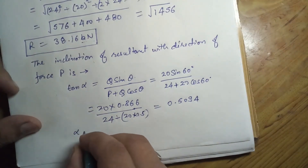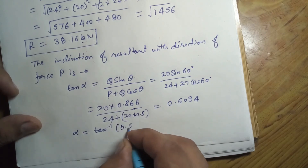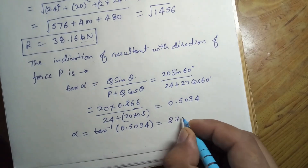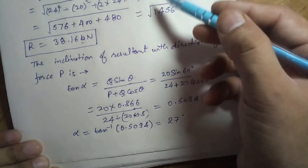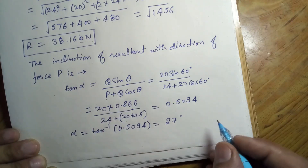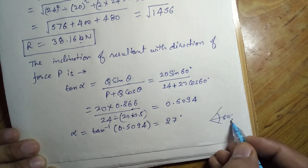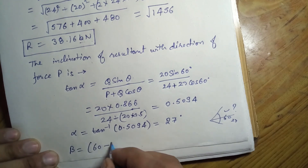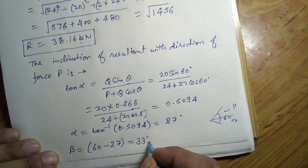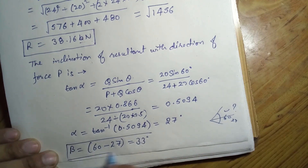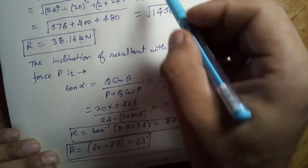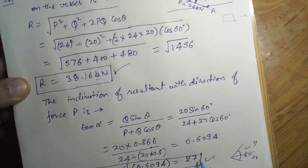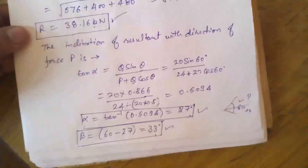From tan(α) = 0.5094, we get alpha = tan⁻¹(0.5094) = 27 degrees. Since the total angle between the ropes is 60 degrees and alpha is 27 degrees, beta = 60 − 27 = 33 degrees. So the resultant pull is 38.16 kilonewton, with the rope angles being 27 degrees and 33 degrees respectively. Thank you.